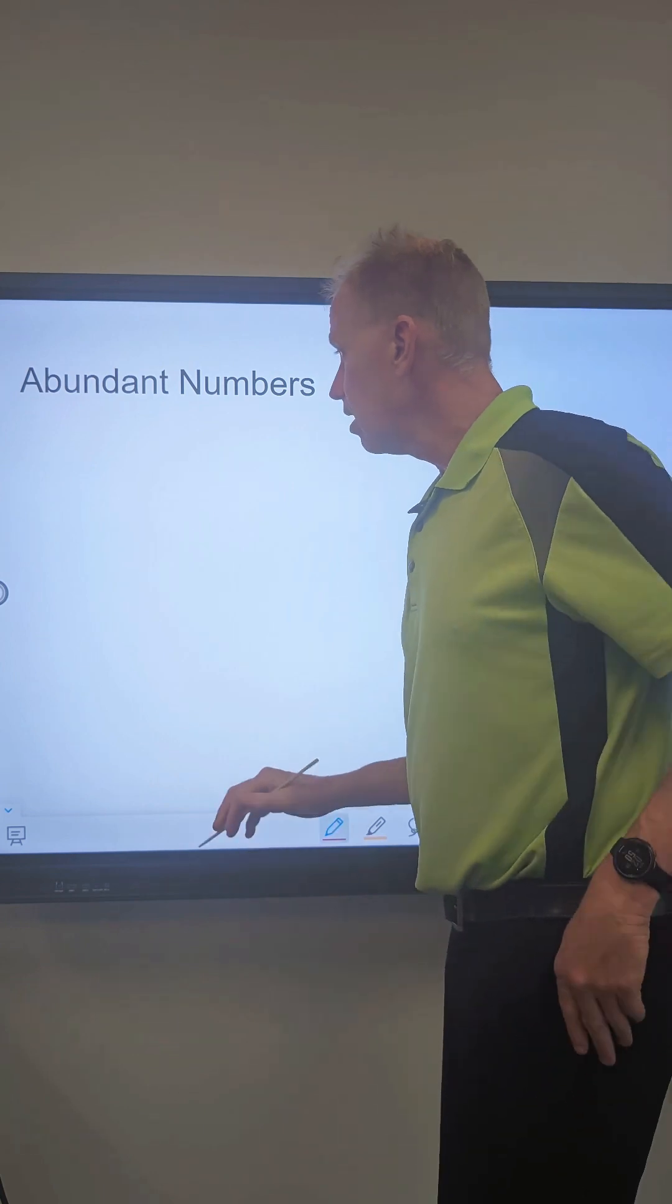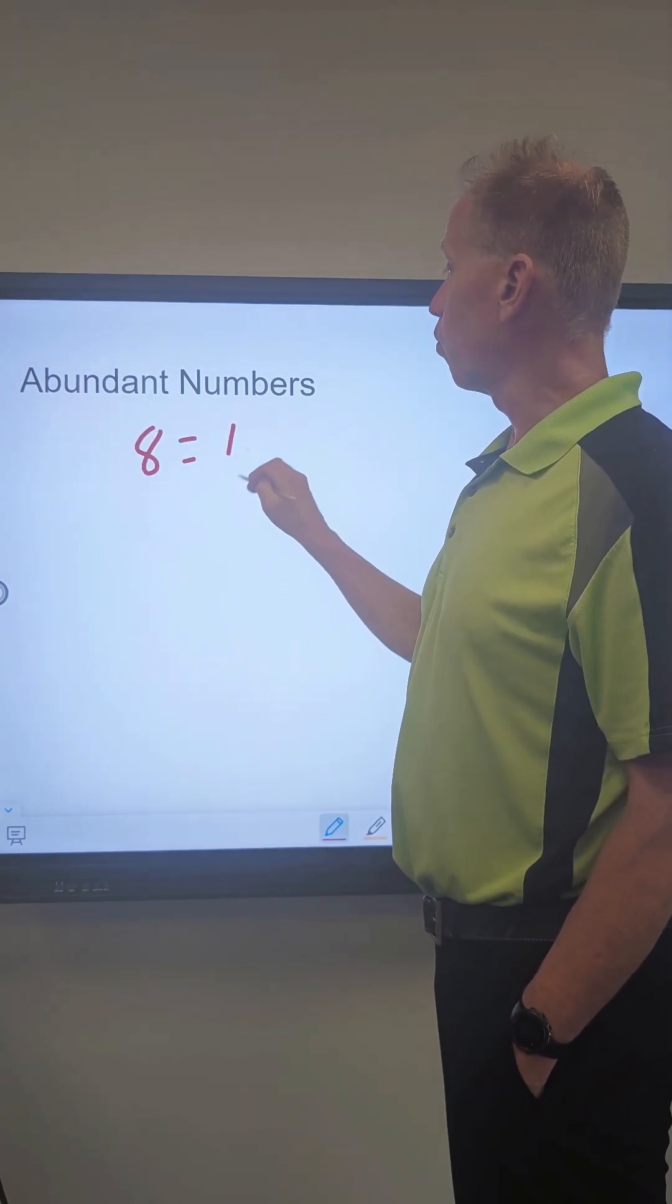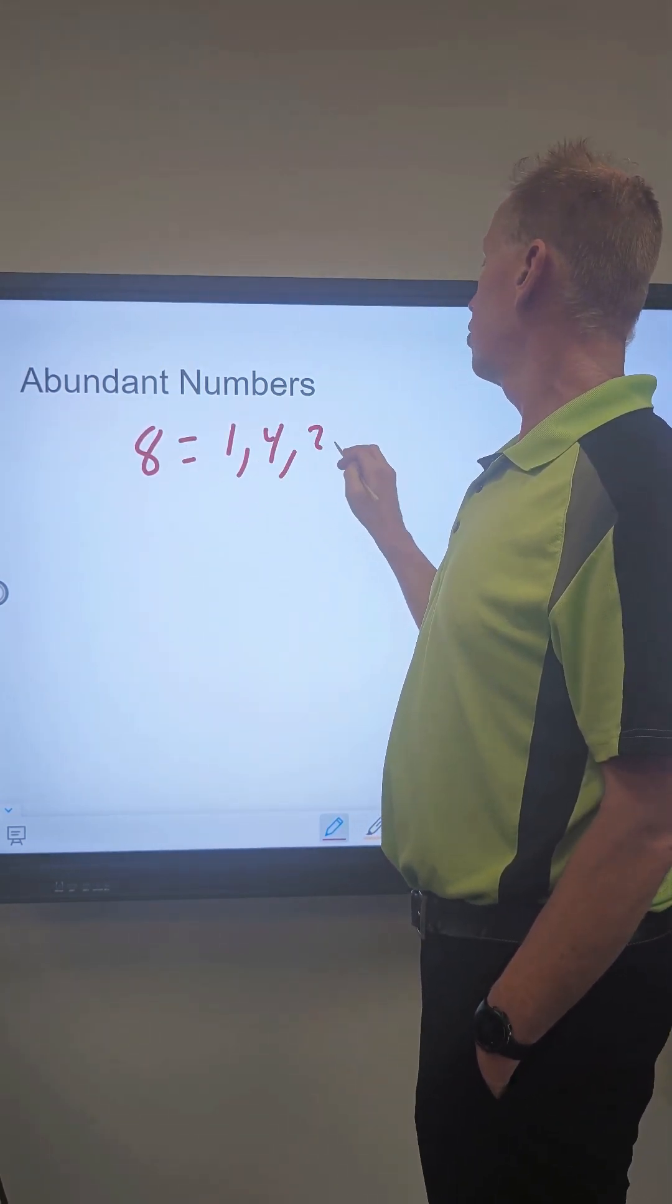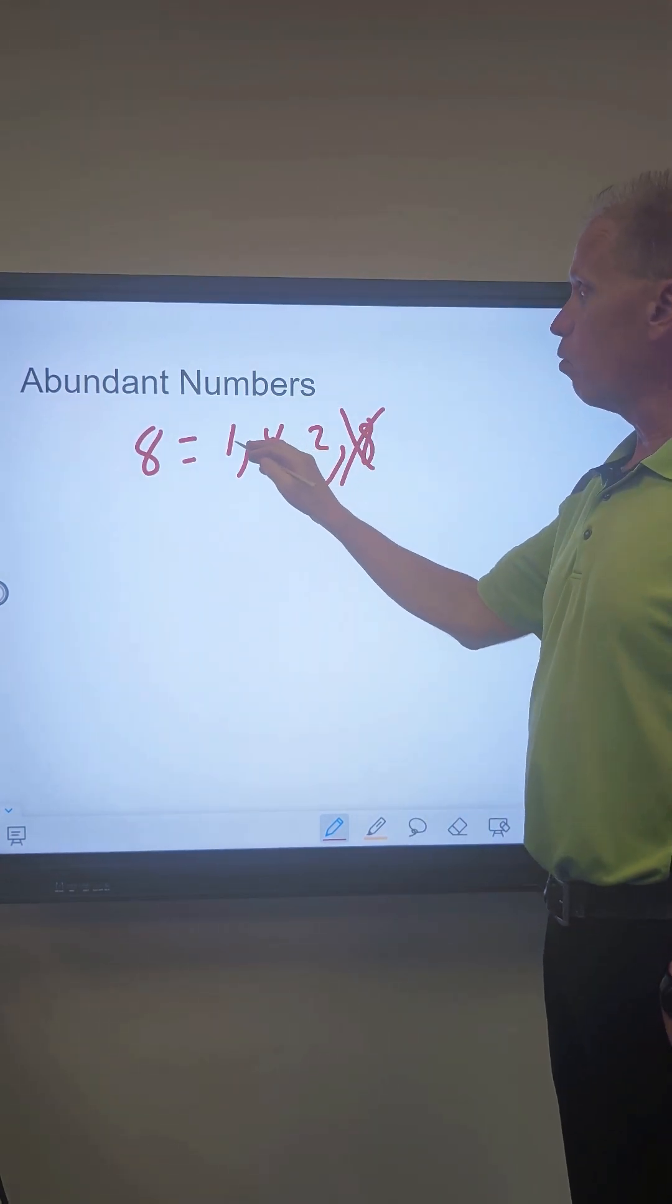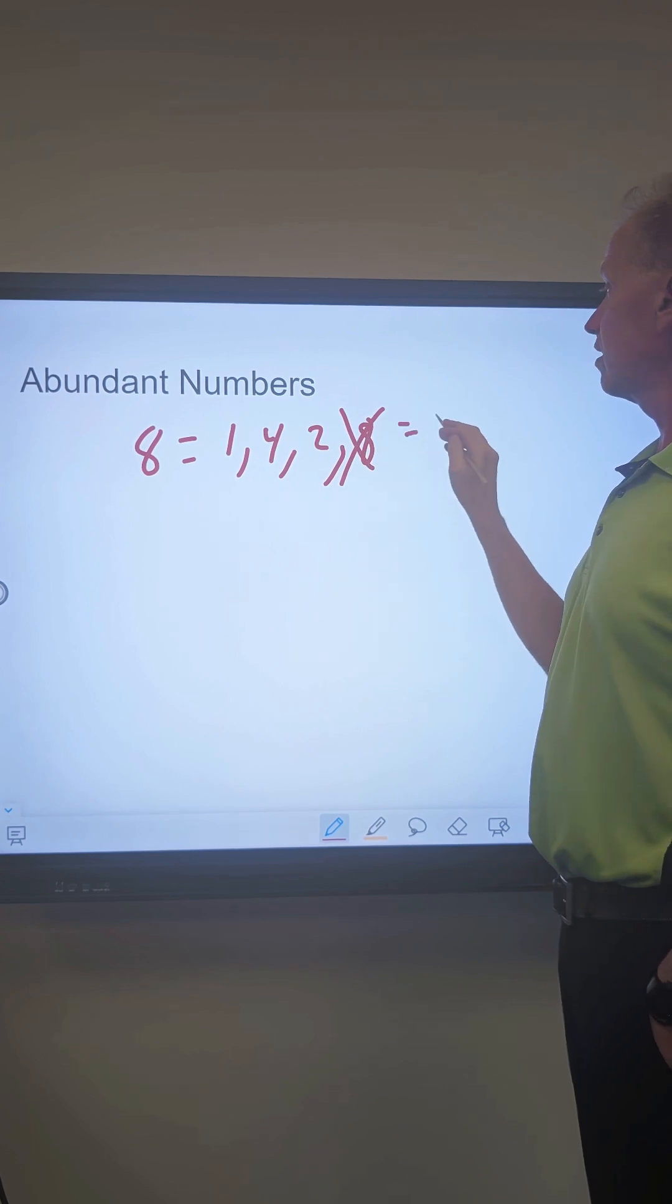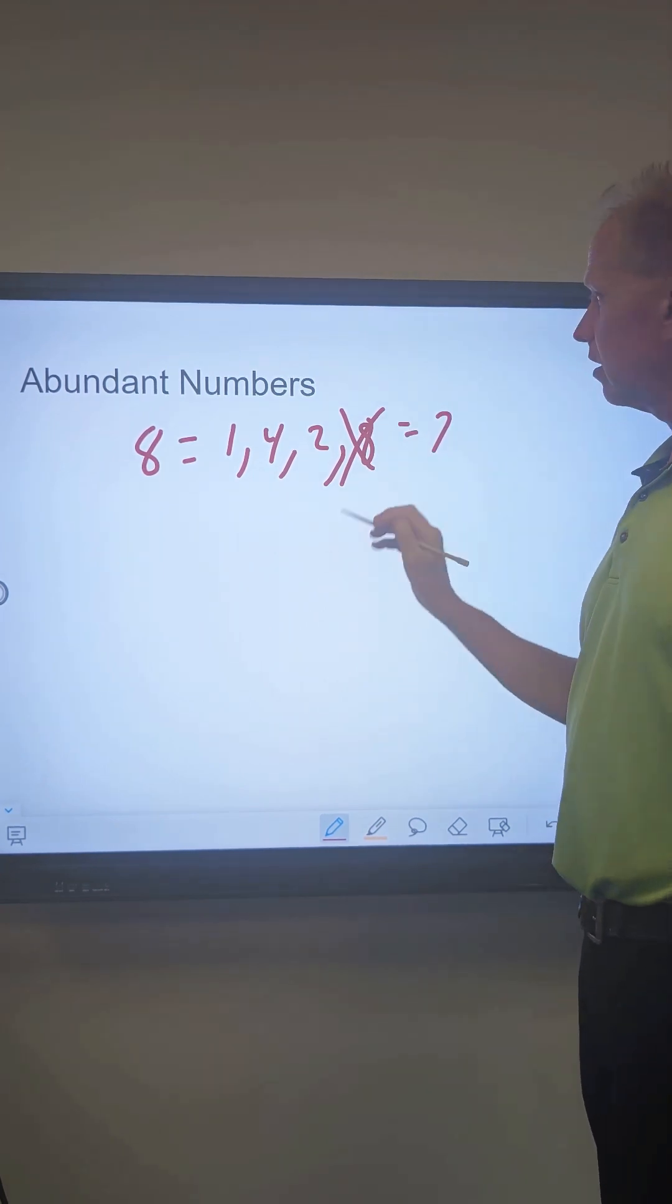For example, if I had the number eight, its factors are one, four, two, and eight, but you don't count the eight. So then you add up one plus four is five, plus two is seven. So that is not an abundant number.